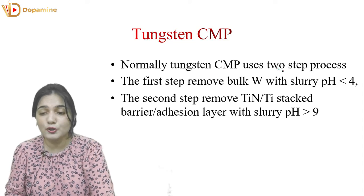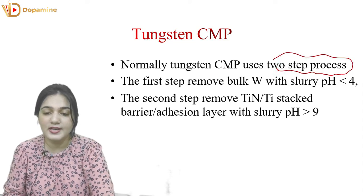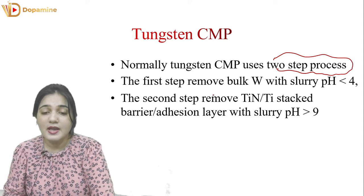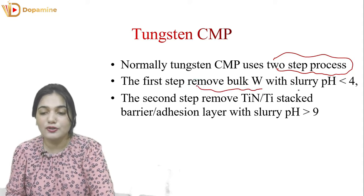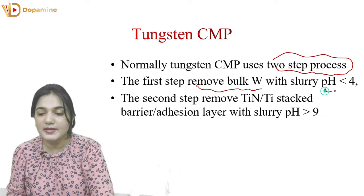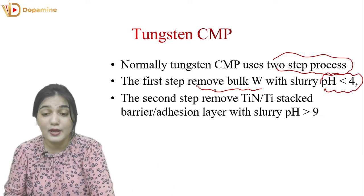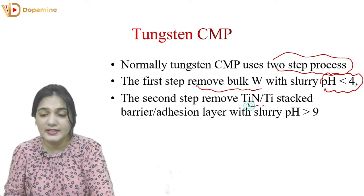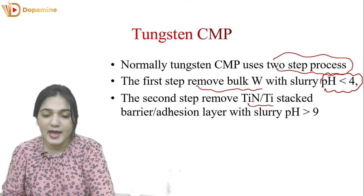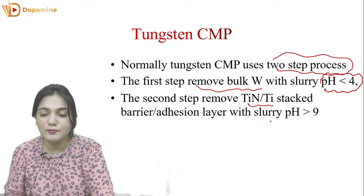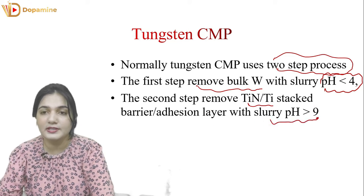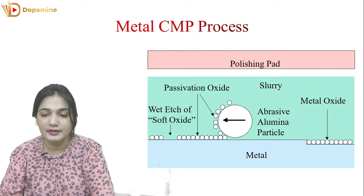Tungsten CMP is usually a two-step process. In the first step, bulk tungsten is removed using a slurry with pH less than 4. In the second step, the titanium and titanium nitride stacked barrier and adhesion layer are removed using a slurry with pH greater than 9.